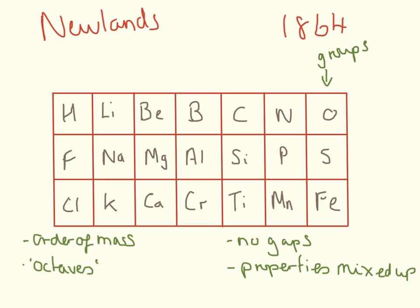But it wasn't very popular because there were a few problems with it. First of all, there were no gaps, so he'd assumed that everything that could be discovered had already been discovered, and he didn't think anything else would be discovered in the future. He had the properties of certain things mixed up, so here we have carbon and titanium in the same group, and they obviously have very different properties.